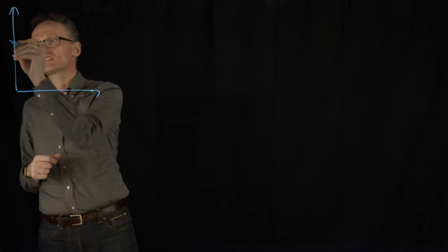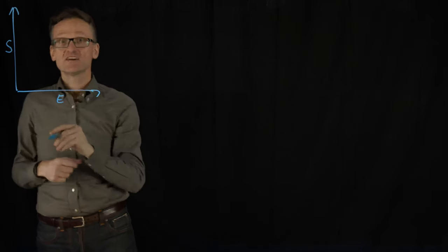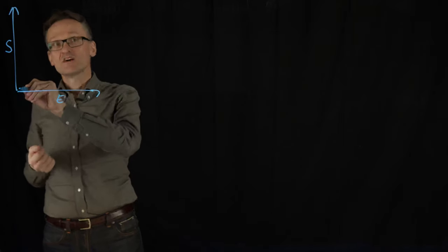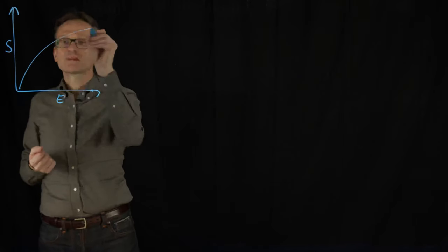On one axis here we have entropy S and on the other one we have energy E. And what happens as I'm pumping more energy into the system - typically we're going to have a curve that looks something like that.